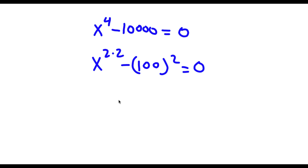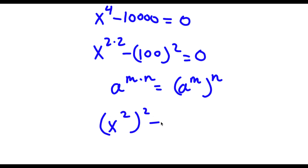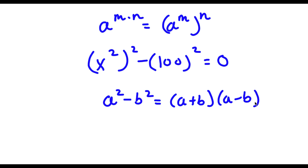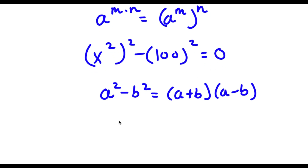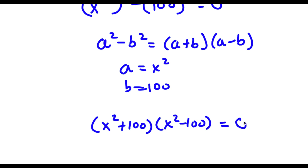Now if I have something in the form a to the power of m times n, this is equal to a to the power of m to the power of n. So x to the power of 2 times 2 can be written as x squared to the power of 2, giving me x squared squared minus 100 squared equals 0. Now using the difference of squares — a squared minus b squared equals a plus b times a minus b — where a is x squared and b is 100, I get x squared plus 100 times x squared minus 100 equals 0.